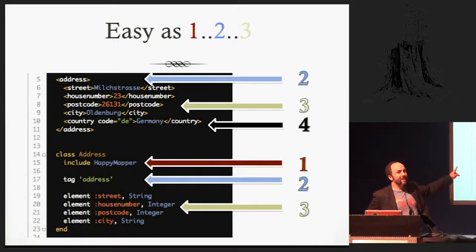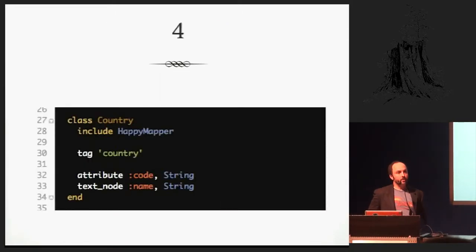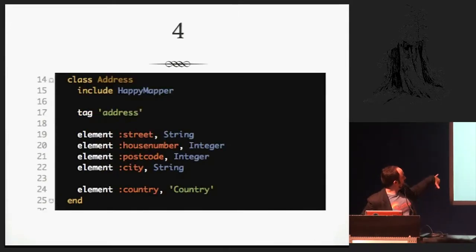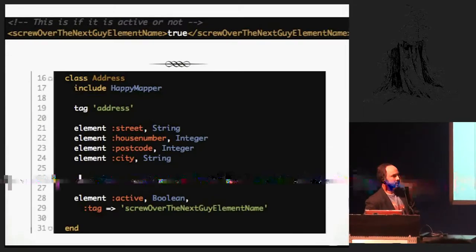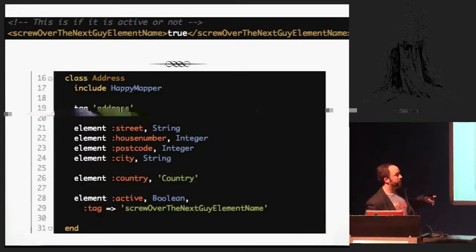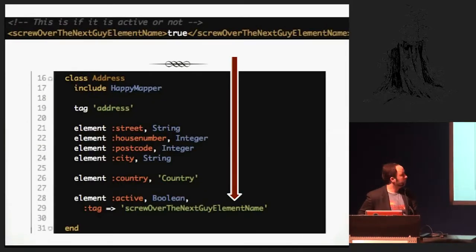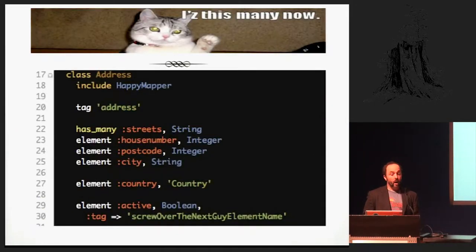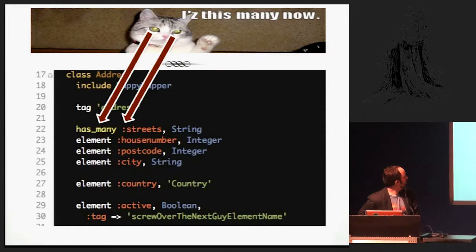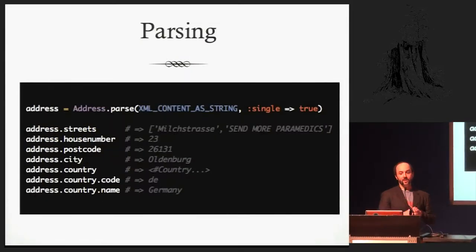How do you handle nested elements? I made a little subclass — a country class with HappyMapper, a tag 'country', and I use attribute and text_node to deal with attributes and text nodes. You can deal with elements that have crazy names by just specifying a tag. Where streets have two names, you can say has_many — and it even highlights in Rails style. Parsing is super simple — include HappyMapper, and it puts a parse method on the class. That's it, returns all those values.